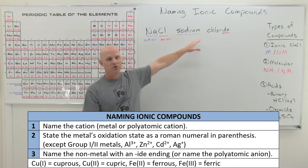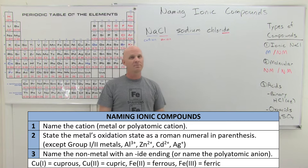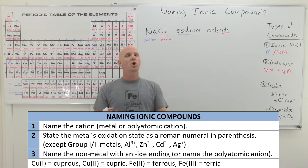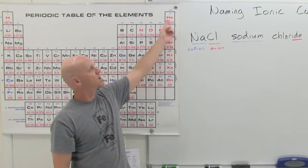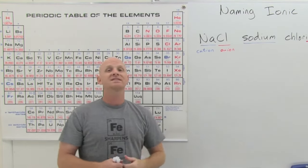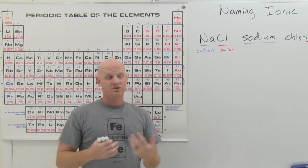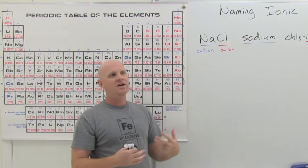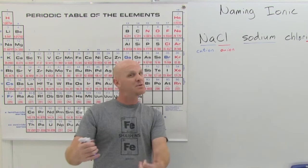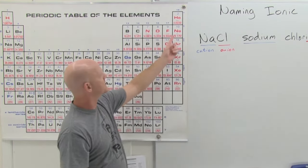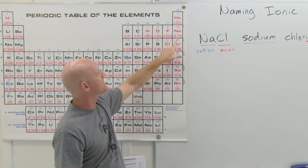You name the anion with the -IDE ending. For sodium chloride that's straightforward, but for some compounds it gets more complicated. We need to talk about charges on ions. Noble gases are special because they have the perfect number of electrons and are just a little more stable. The elements around them want to either gain or lose electrons in an attempt to have the same number of electrons as the nearest noble gas.